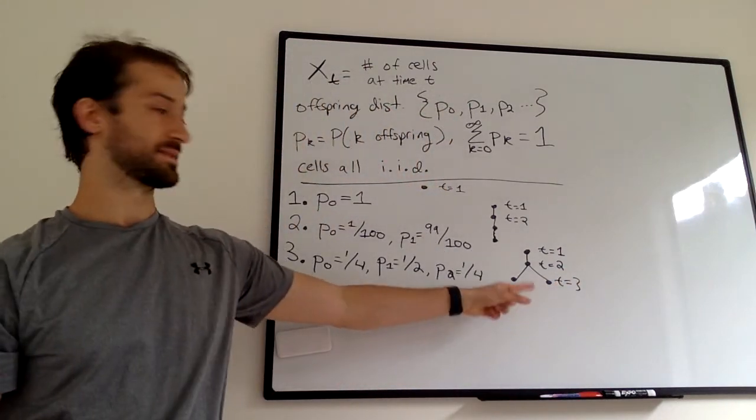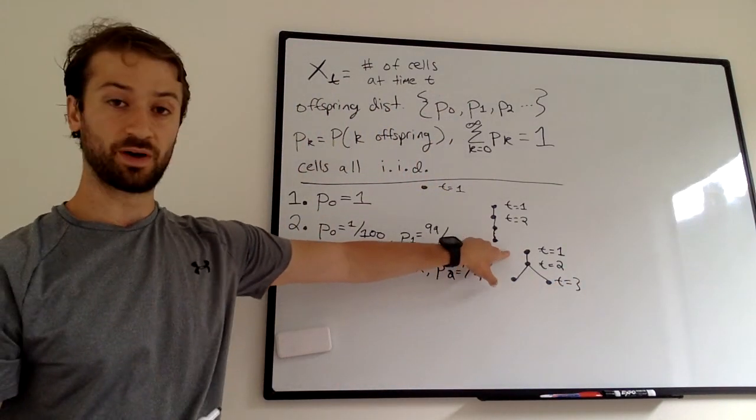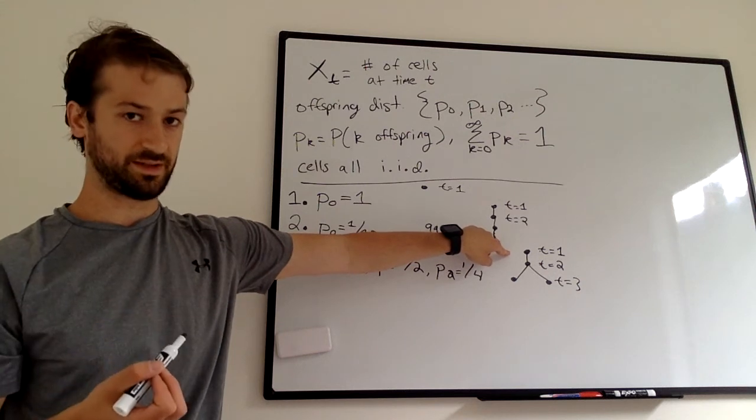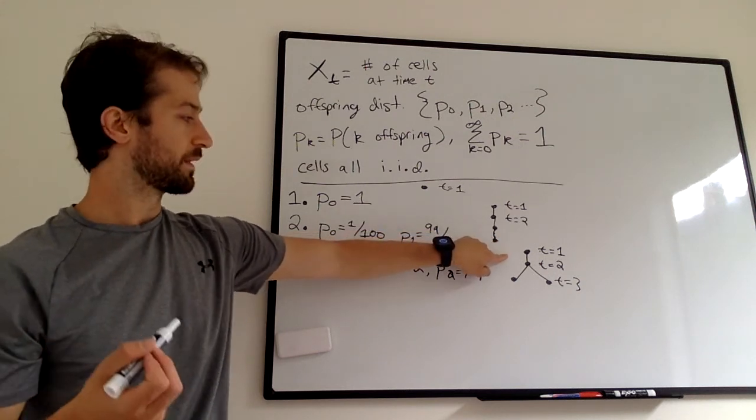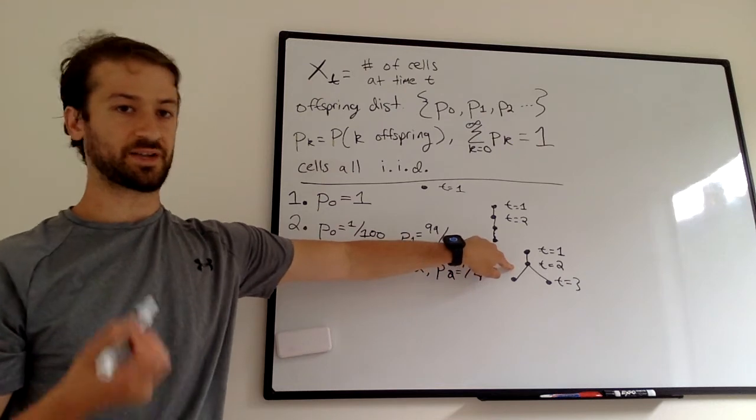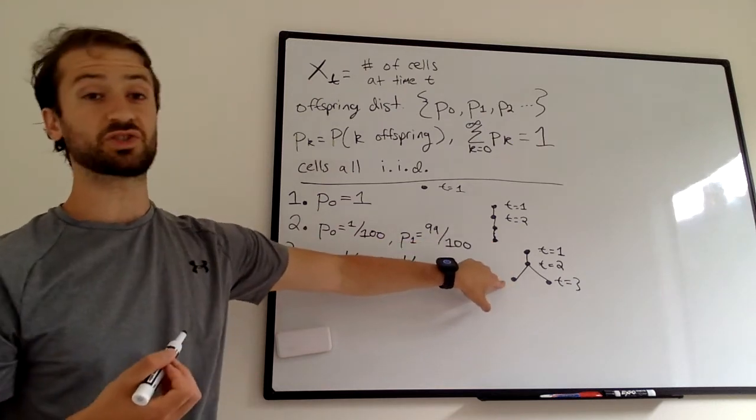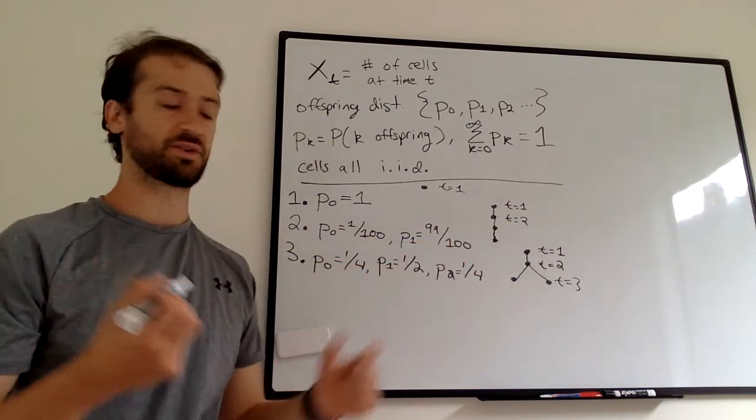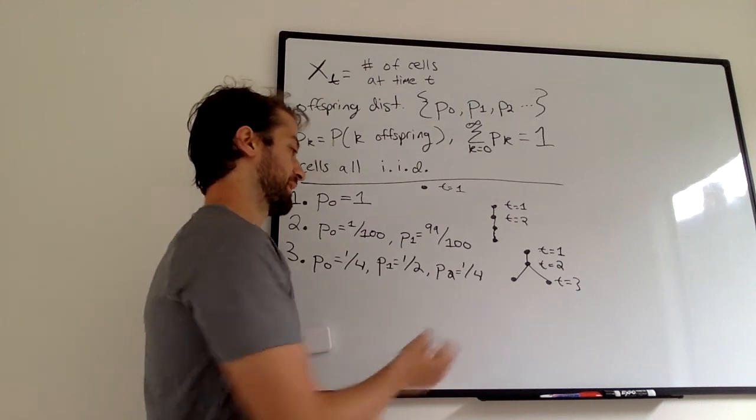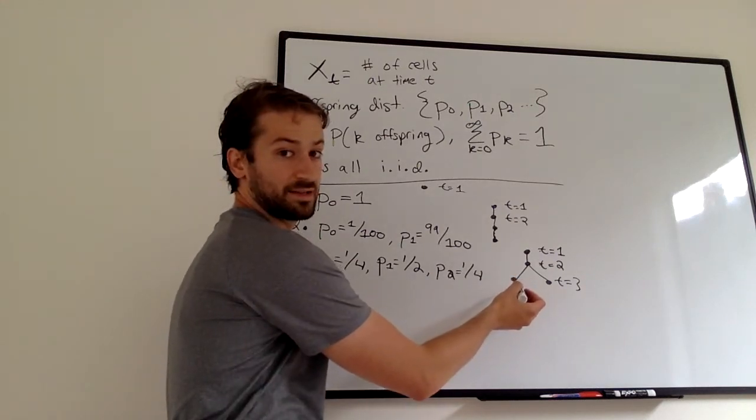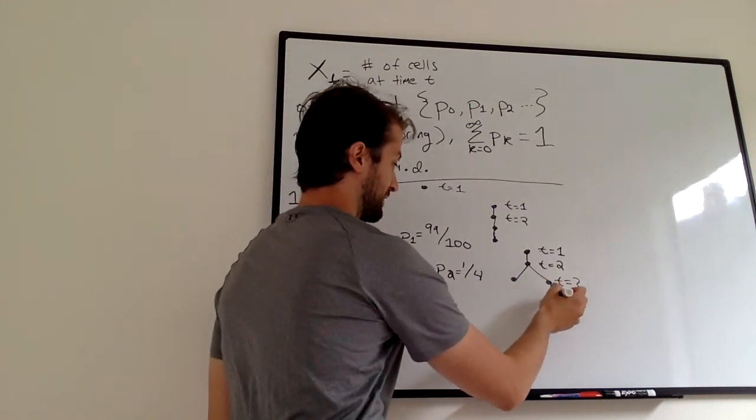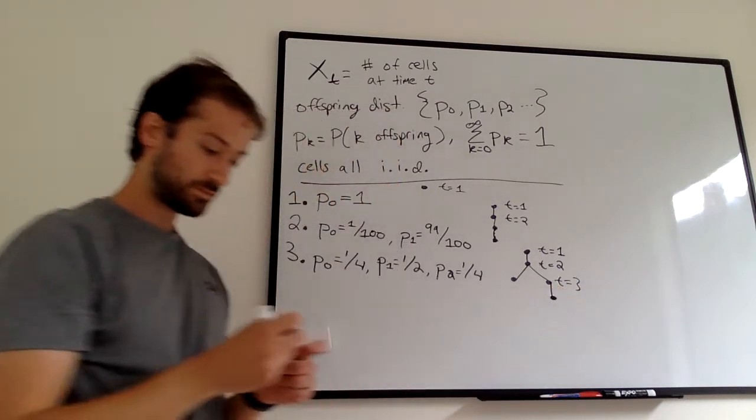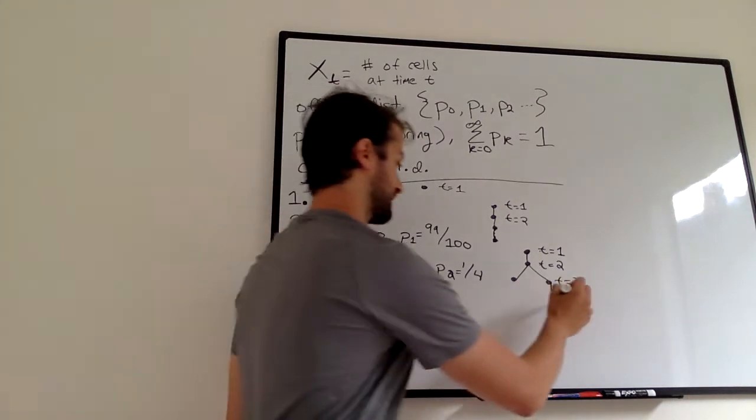Basically, in this case, X sub 1 is 1, because there's one cell in that generation at time T. X sub 2 is also 1. There's one cell in that generation at time 2. X sub 3 is 2, because there are two cells in that generation at time 3. Let's say that this cell has zero kids, so it dies out, and then say that this cell has one offspring. That's T equals 4.